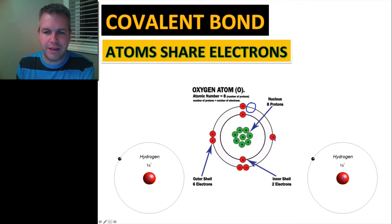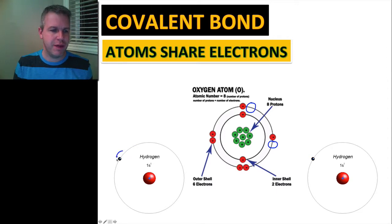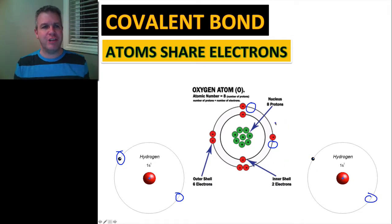Now that leaves a space here and a space here for it to pick up an electron to have its outermost shell full or complete, which is what it wants to do, and hydrogen wants to do the same thing. It only has one electron, and so in order for its outermost shell to be filled it wants to gain another electron.